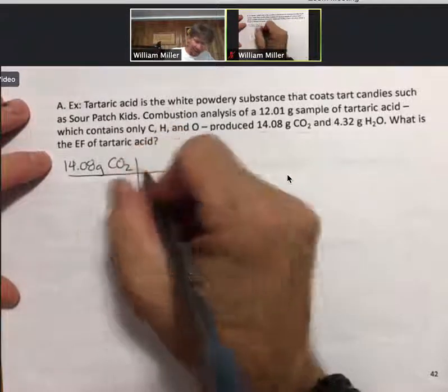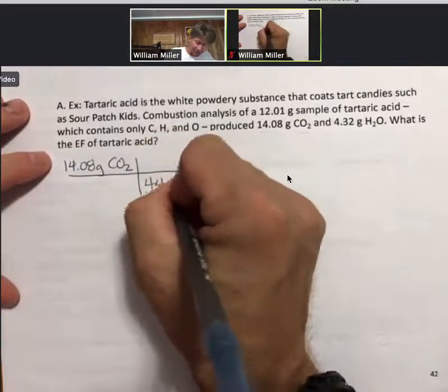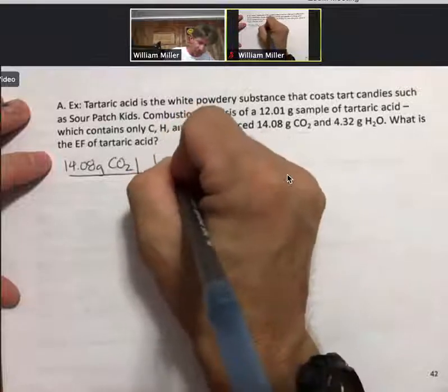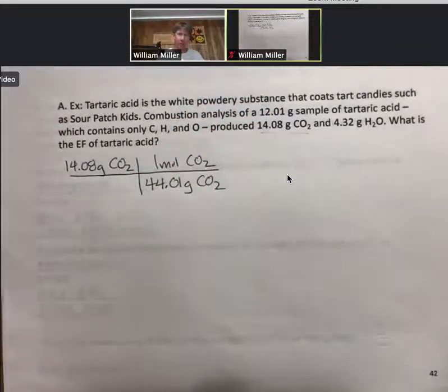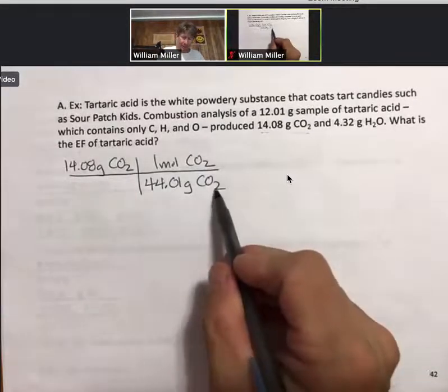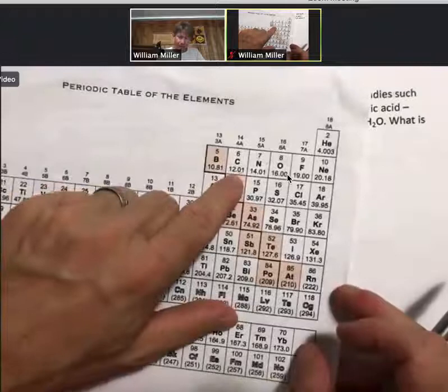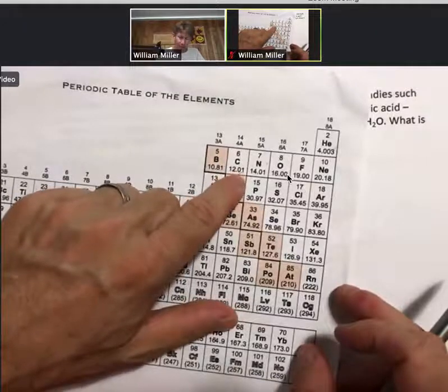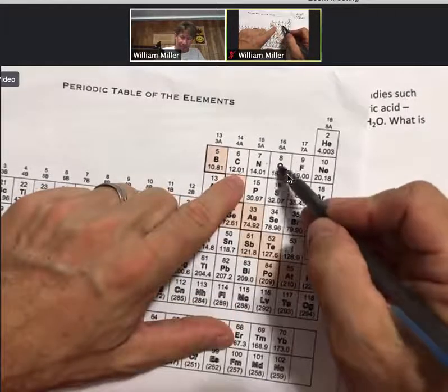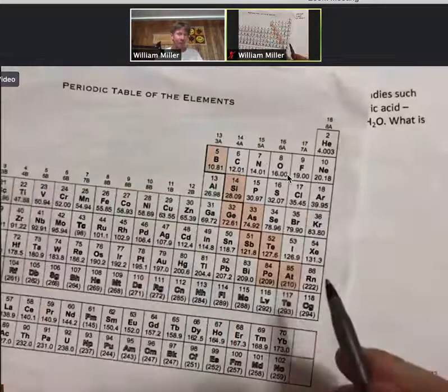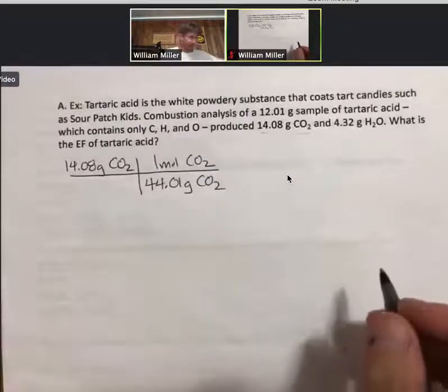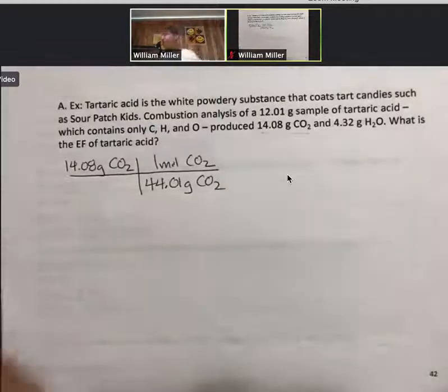So carbon dioxide has a molar mass of 44.01 grams per one mole. And just as a quick reminder, carbon dioxide, 12.01 for one carbon plus two times 16 for oxygen, that's going to be my 44.01. All right, periodic table goes over there.